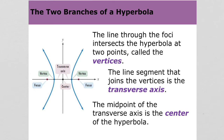Hyperbolas have a center, they have vertices, and they have foci. The transverse axis — which I also call the major axis — is the axis that goes through all those things: the center, the vertices, and the foci.